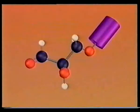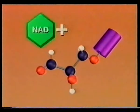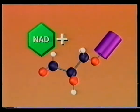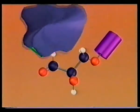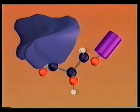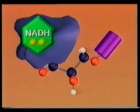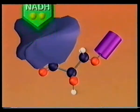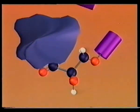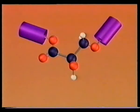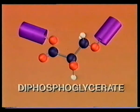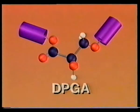Now, let's return to glycolysis. In reaction six, NAD+ saddles a molecule of PGAL. And with the aid of an enzyme, NAD+ picks up two electrons and a hydrogen ion. The product is an energy-rich NADH. In this exchange, PGAL grabs a free phosphate to form diphosphoglycerate, or DPGA.